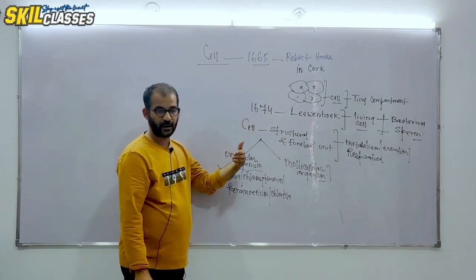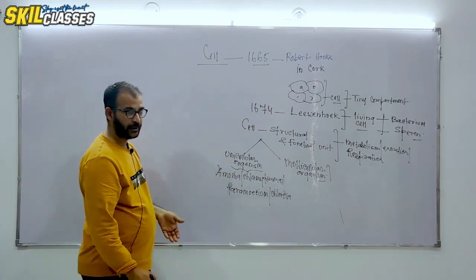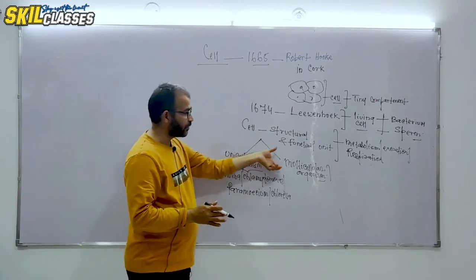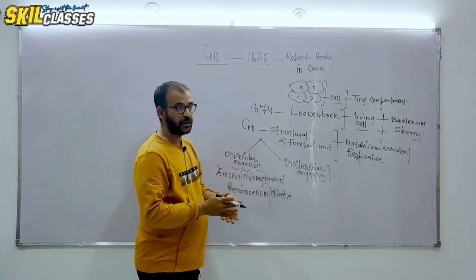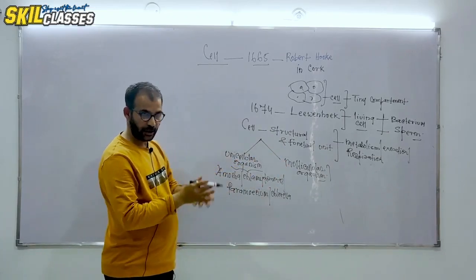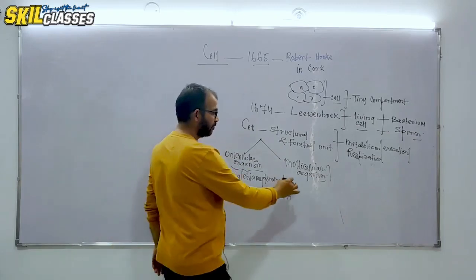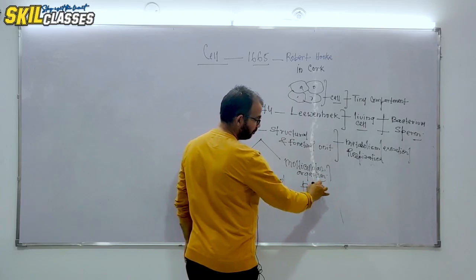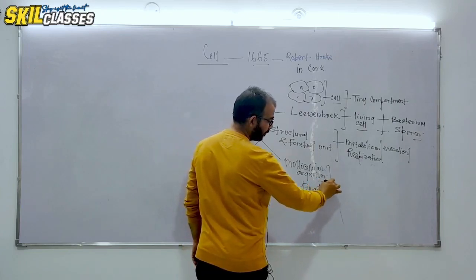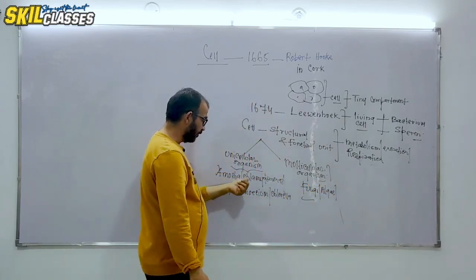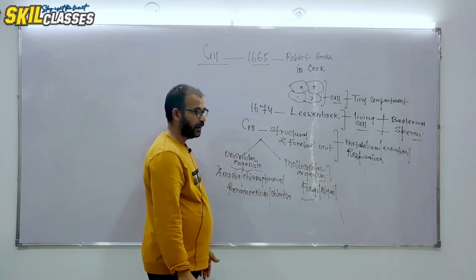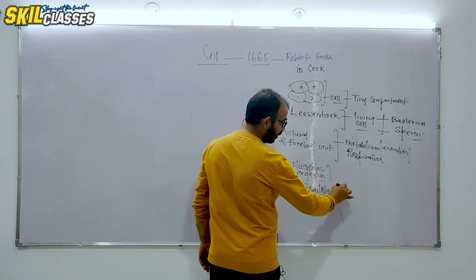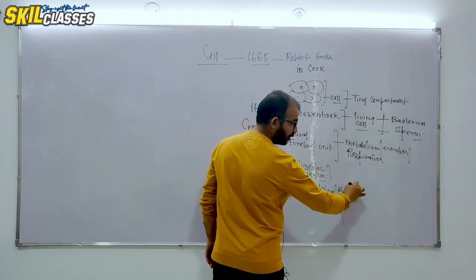Whereas multicellular organisms start from Protista. Protista is basically unicellular organism. After Protista, we have all the kingdoms which contain many cells. Fungi are multicellular organisms. Some algae like Chlamydomonas and Chlorella, but many algae are multicellular. Kingdom Plantae, all multicellular. Animalia, multicellular.